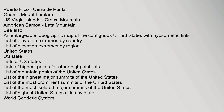Puerto Rico: Cerro de Punta. Guam: Mount Lamlam. U.S. Virgin Islands: Crown Mountain. American Samoa: Lata Mountain. See also: an enlargeable topographic map of the contiguous United States with hypsometric tints; List of elevation extremes by country; List of elevation extremes by region; United States U.S. State Lists; Lists of U.S. States; Lists of highest points; High Point Lists; List of mountain peaks of the United States; List of the highest major summits of the United States; List of the most prominent summits of the United States; List of the most isolated major summits of the United States; List of highest United States cities by state; World Geodetic System.